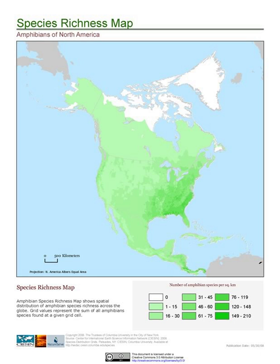Species distribution is the manner in which a biological taxon is spatially arranged. The geographic limits of a particular taxon's distribution is its range, often represented as shaded areas on a map. Patterns of distribution change depending on the scale at which they are viewed, from the arrangement of individuals within a small family unit, to patterns within a population, or the distribution of the entire species as a whole. Species distribution is not to be confused with dispersal, which is the movement of individuals away from their region of origin or from a population center of high density.